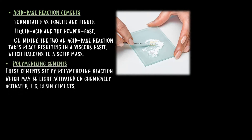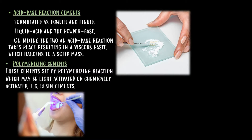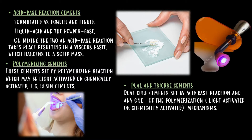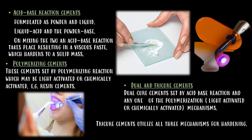Polymerizing cements set by a polymerizing reaction, which may be light-activated or chemically activated. Examples are the resin cements. Dual cure cements set by acid-base reaction and any one of the polymerization mechanisms, either light-activated or chemically activated. Tricure cements utilize all three mechanisms for hardening.